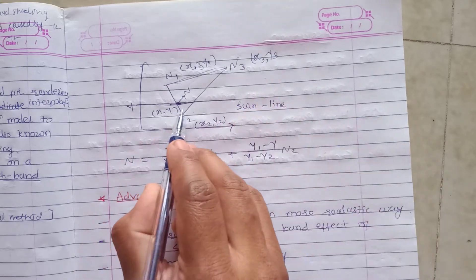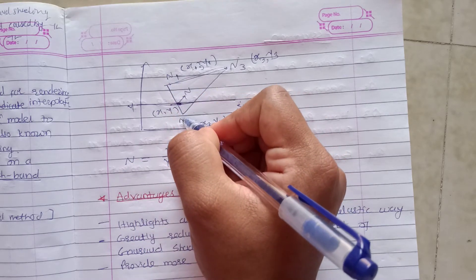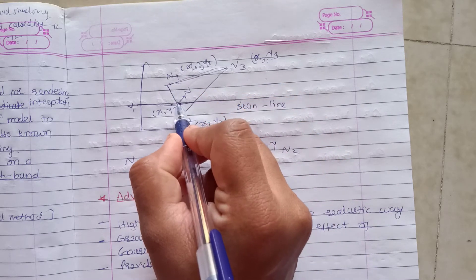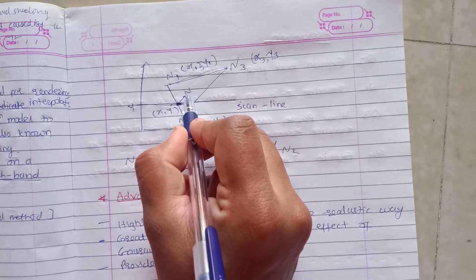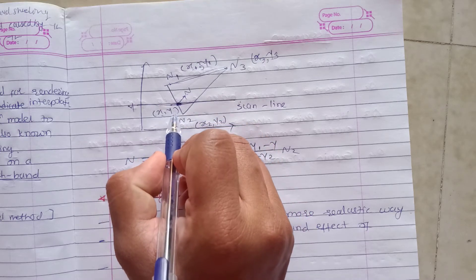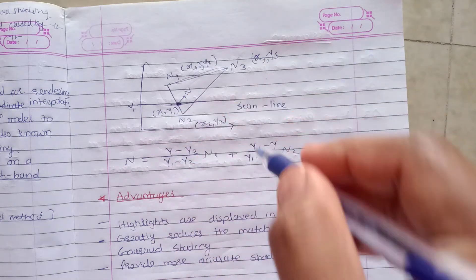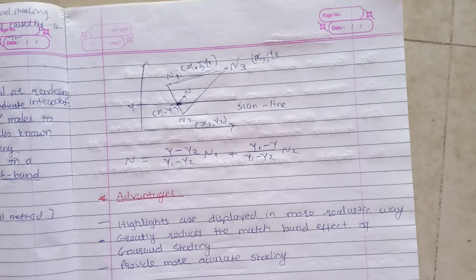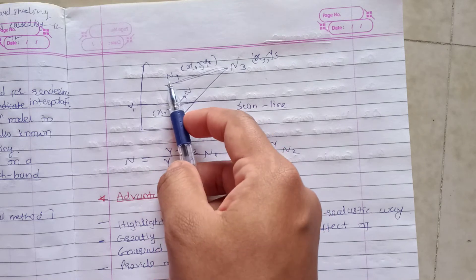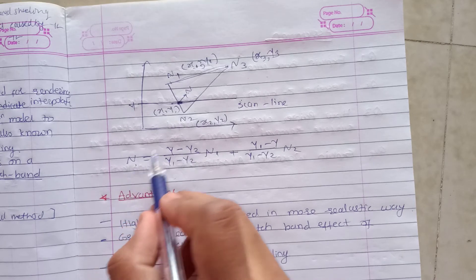This will automatically linearly interpolate from all the points between the vertices and edges 1 and 2. If we calculate this value, it automatically interpolates. The value n is calculated as follows: n equals...